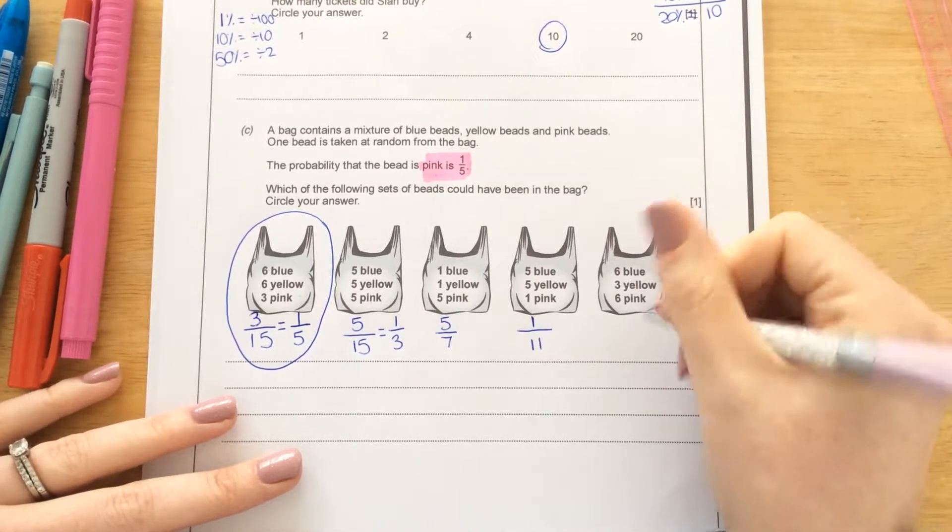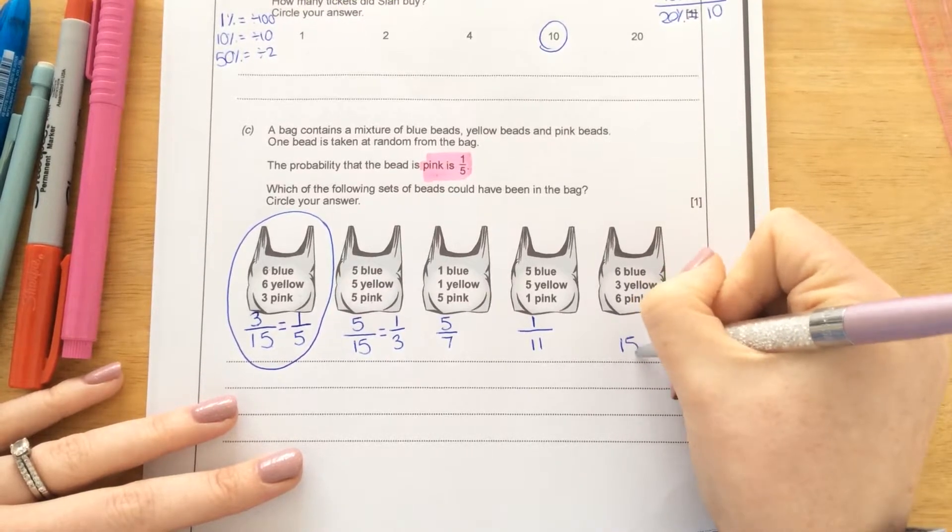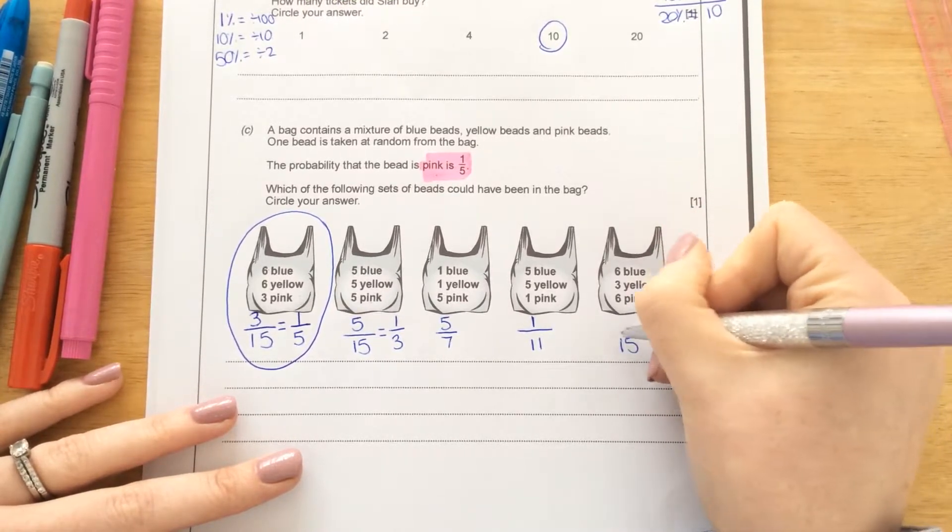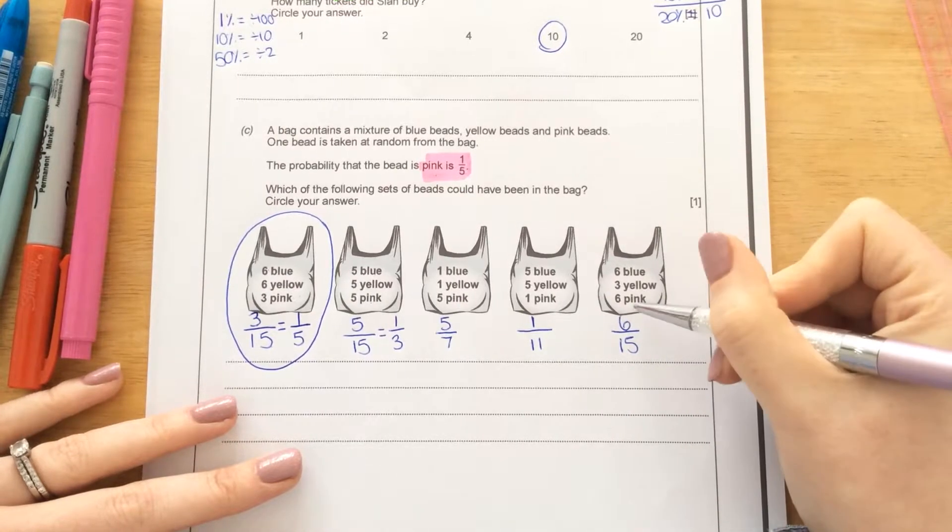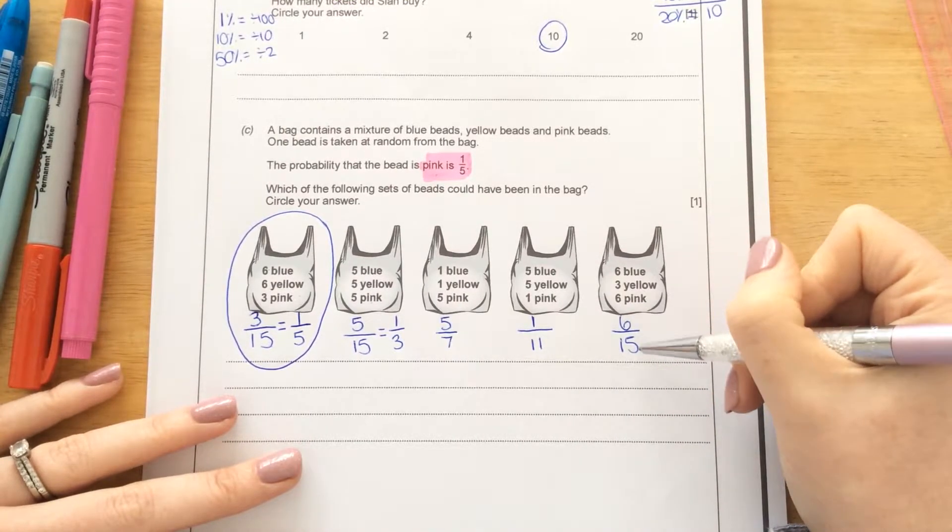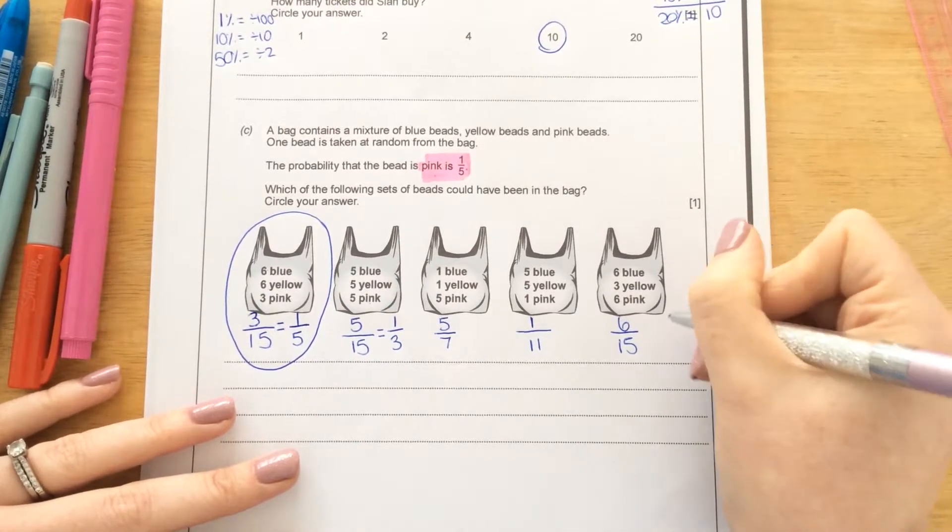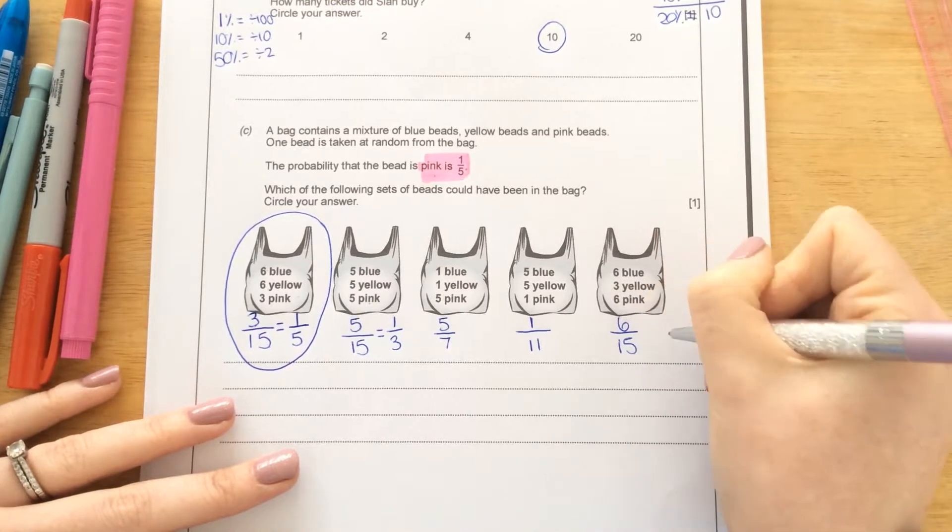6 and 6 is 12. And 3 is 15. And there are 6 pink beads. So we need a number that goes into both 6 and 15. Well, that's 3. 3 goes into 6 and it goes into 15.